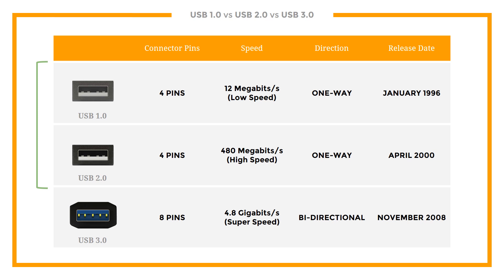Following USB 1.0, USB 2.0 showed increased speeds of up to 40 times its predecessor. In November of 2008, USB 3.0 was released with a modified color and a speed 10 times faster than its predecessor. This table is a comparison of the features of USB 1.0, 2.0, and 3.0. Both USB 1.0 and 2.0 have four pins and can only send data one way at a time. USB 3.0 features an 8-pin connector which allows for simultaneous bi-directional data transfer.